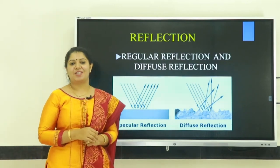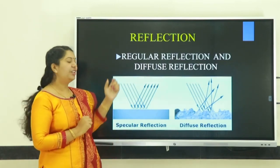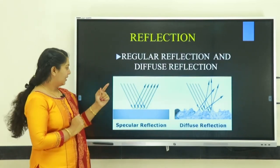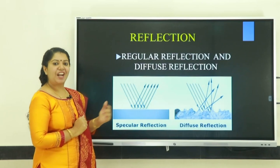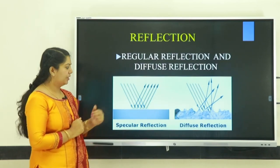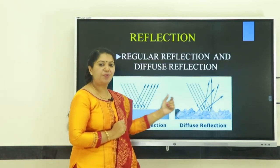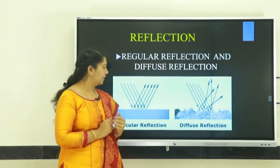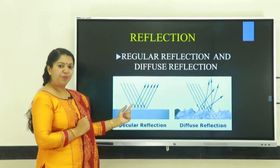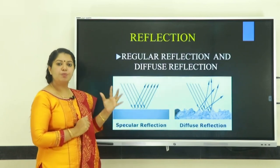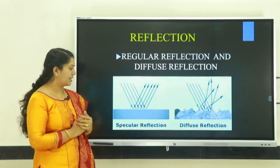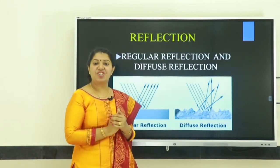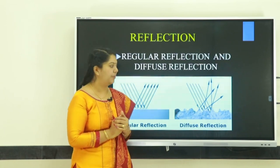Reflections are of two types: regular reflection and diffuse reflection. In regular reflection, all the reflected rays are parallel to each other. But in case of diffuse reflection, all the reflected rays are not parallel to each other. In regular reflection, the reflection takes place on a smooth, polished surface. In diffuse reflection, the reflection takes place on a rough surface.